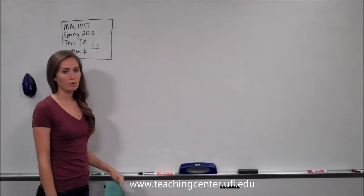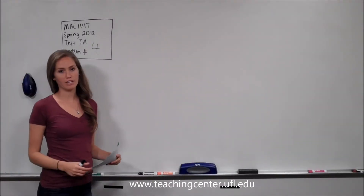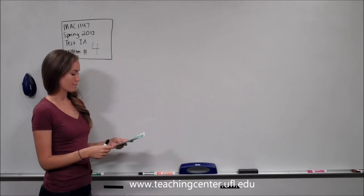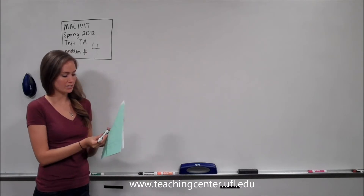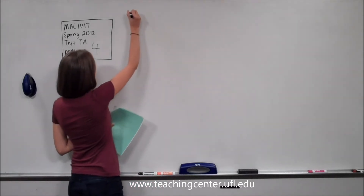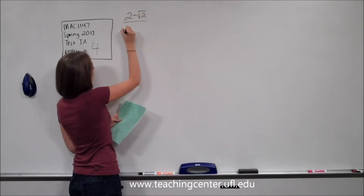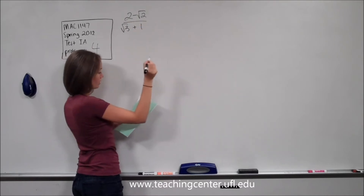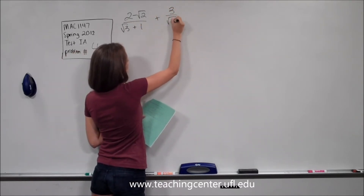Hi everybody. We are doing problem number 4 for MAC 1147 Spring 2012 Test 1A. Number 4 asks us to rationalize the denominator and simplify 2 minus the square root of 2, all over the square root of 3 plus 1, plus 3 times the square root of 6.